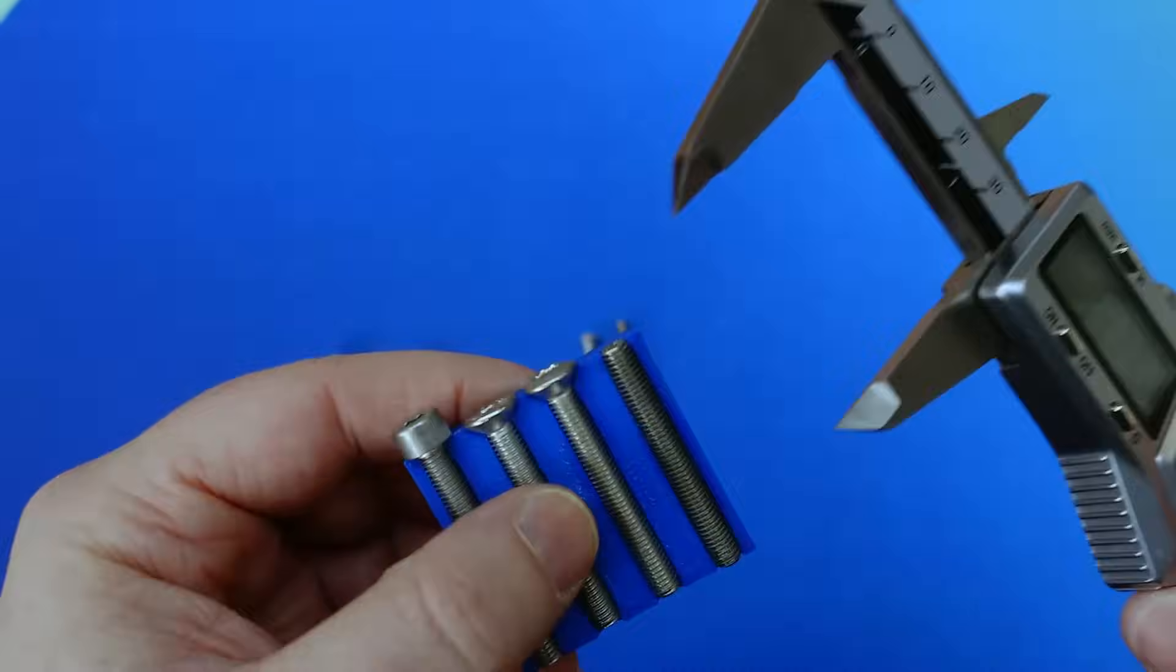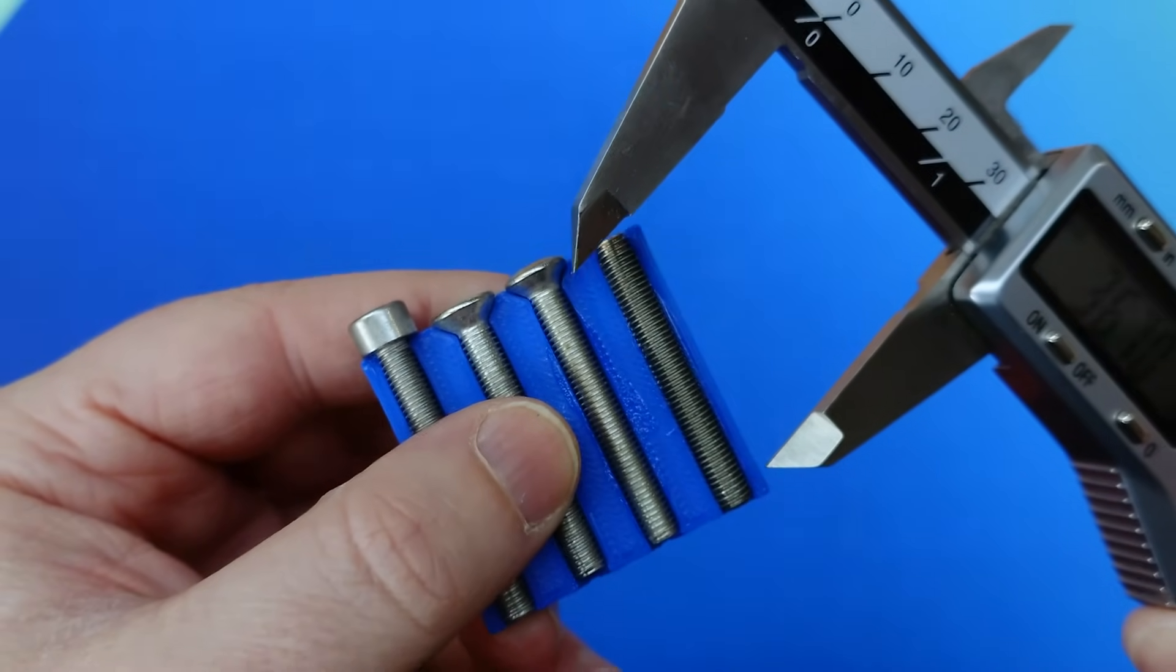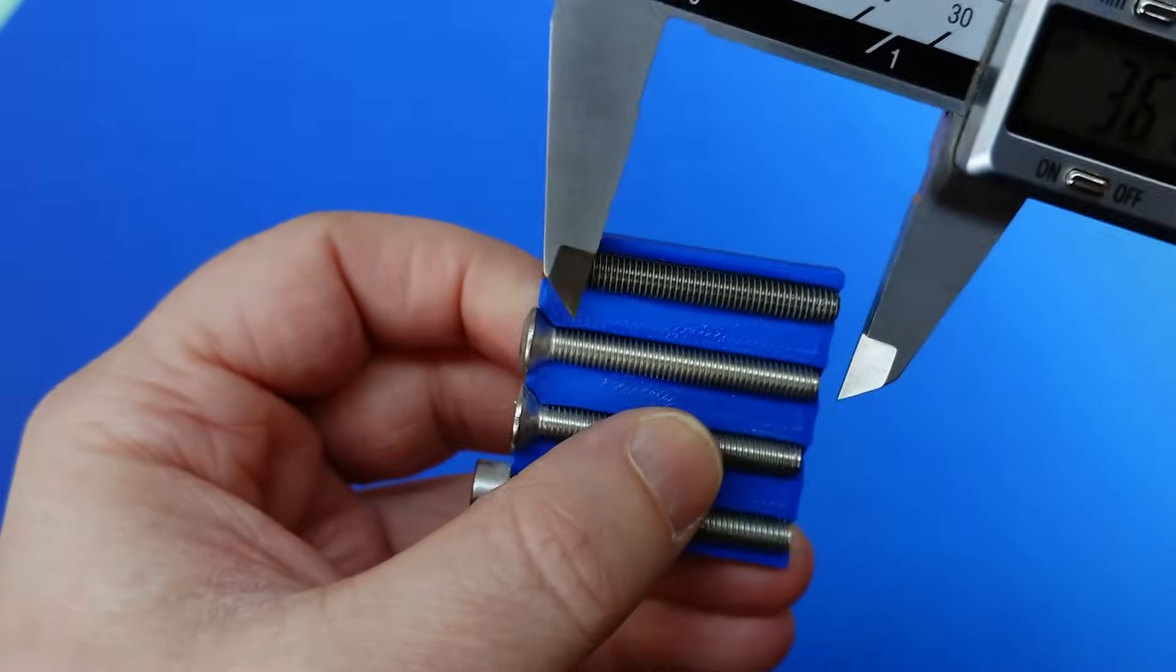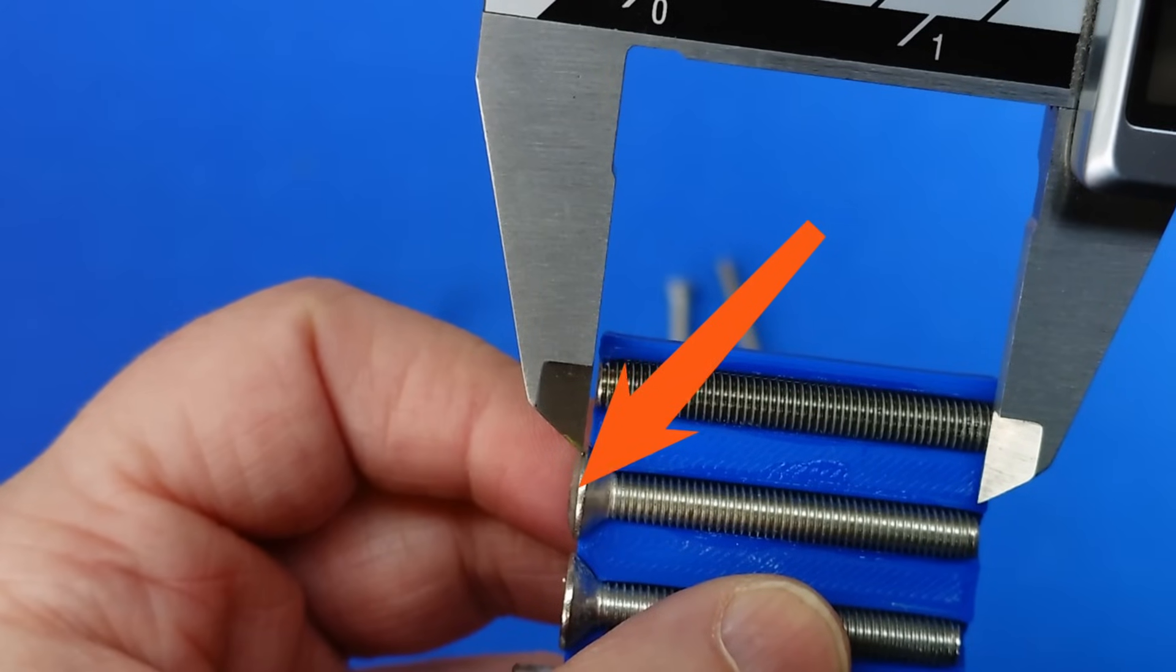So next, I think the raised counter-sunk head illustrates this concept quite nicely, because for these, we measure not from the top or the bottom, but from the part of the head that sits flush with the workpiece, this part right here. Where the counter-sunk part finishes and the raised head begins to the very end of the threads.